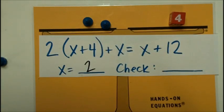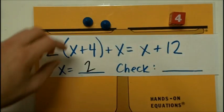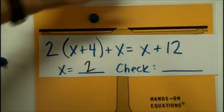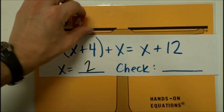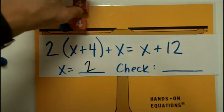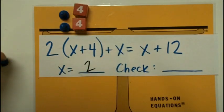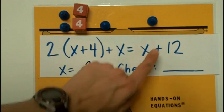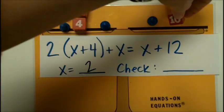Now in order to check, I'm going to build back my original physical setup. So I'm going to start with x plus 4. And then I'm going to double it. x plus 4. I'm going to put on another x. On the opposite side I had an x and a 12.